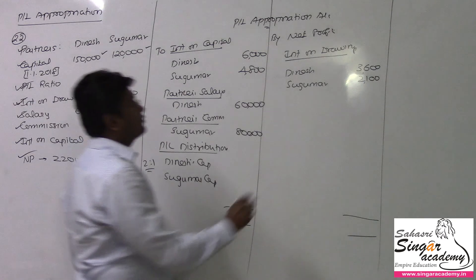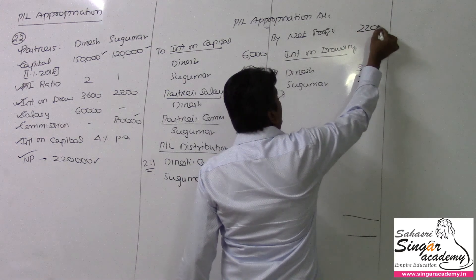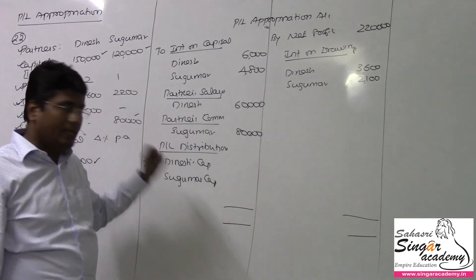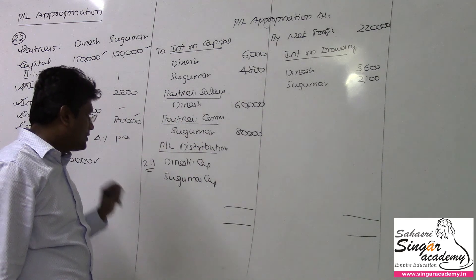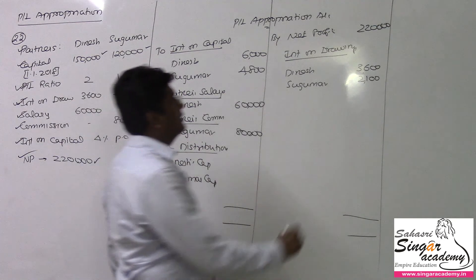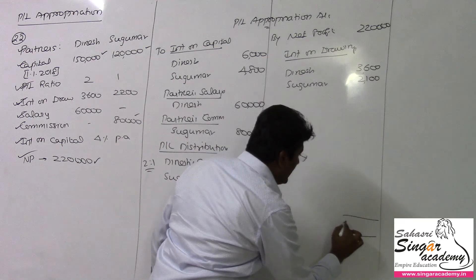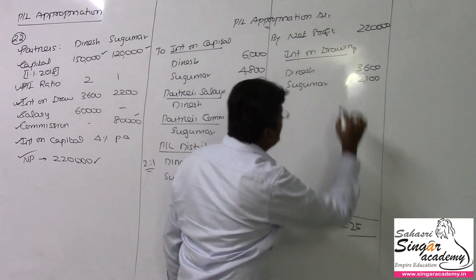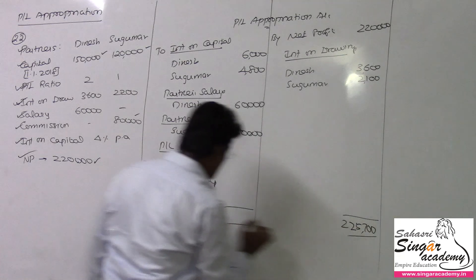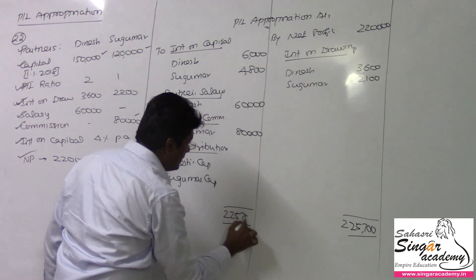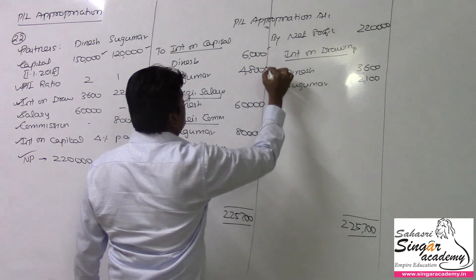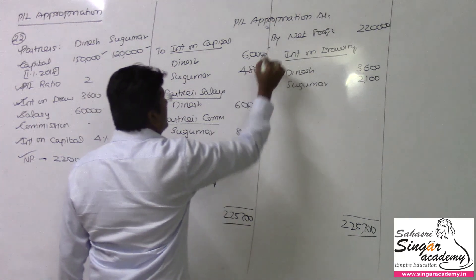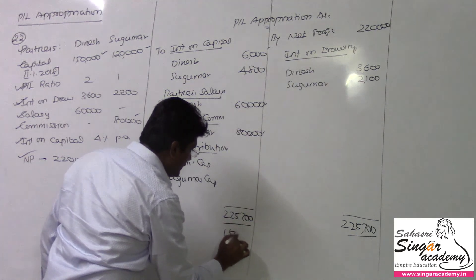Net profit is 2 lakhs 20,000 rupees. After recording all entries, the credit side total comes to 2 lakhs 25,700. The debit side total — including salary 1 lakh 40,000 and interest on capital — comes to 1 lakh 50,800.